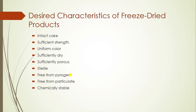The desired characteristics of a freeze-dried product are: after completion of the freeze-drying cycle, the product must be in the form of an intact cake with sufficient strength and uniform color. It should be sufficiently dry to maintain acceptable stability throughout the shelf life, and sufficiently porous to allow a high dissolution rate or short reconstitution time. It should also be pyrogen-free, free from particulate matter, and remain chemically stable.